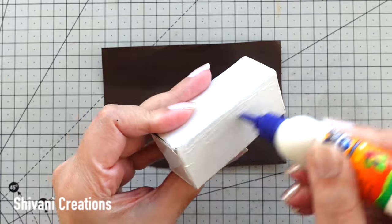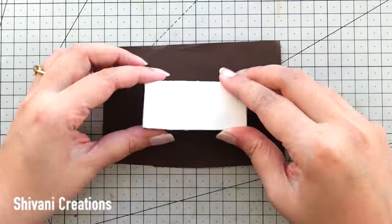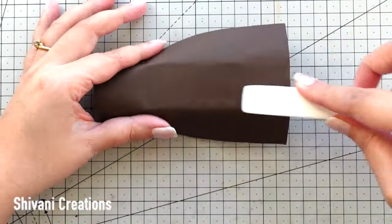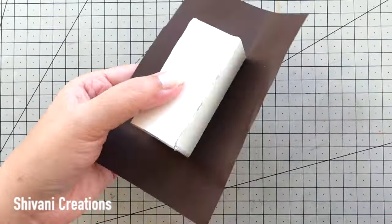These all are Indian musical instruments. Now I am taking this brown color paper and wrapping this whole box using this paper.